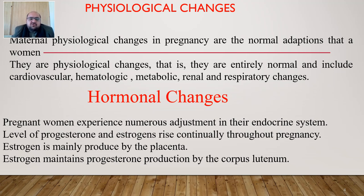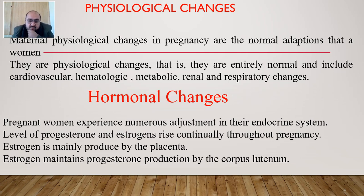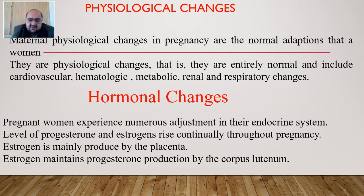Hormonal changes also occur during pregnancy. The pregnant woman experiences numerous adjustments in their endocrine system. The levels of progesterone and estrogen rise continually throughout the pregnancy. Estrogen is mainly produced by the placenta, which connects the baby to the mother. Estrogen also maintains the progesterone production by the corpus luteum.